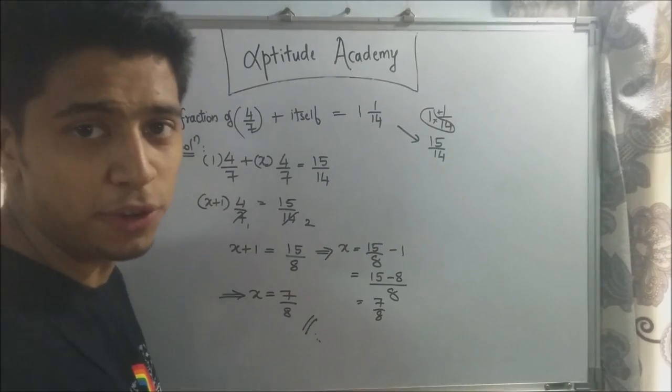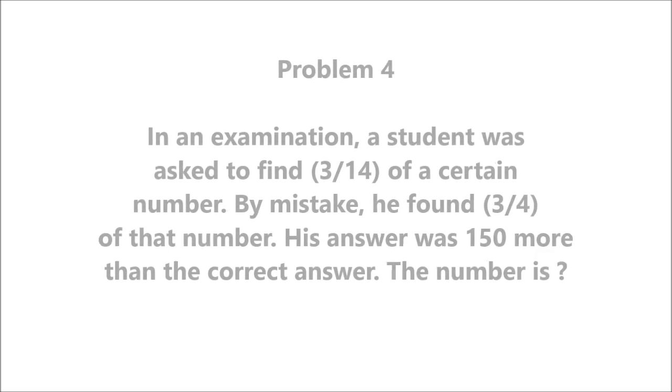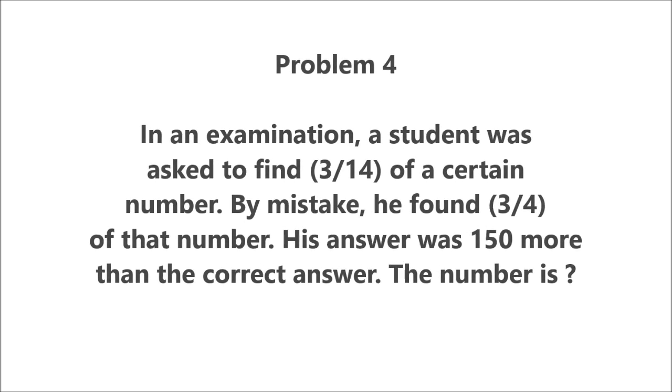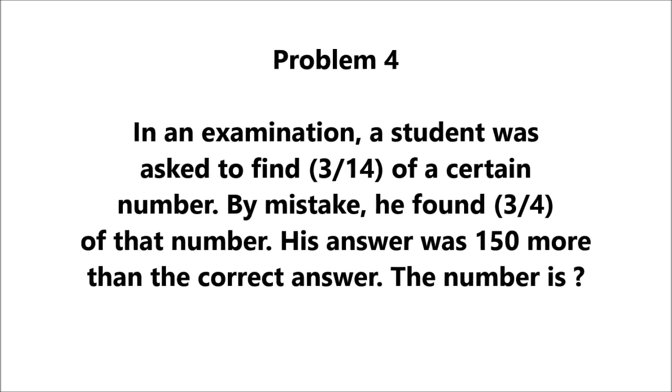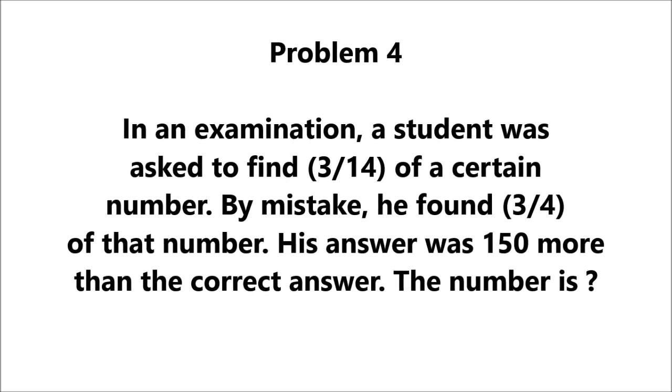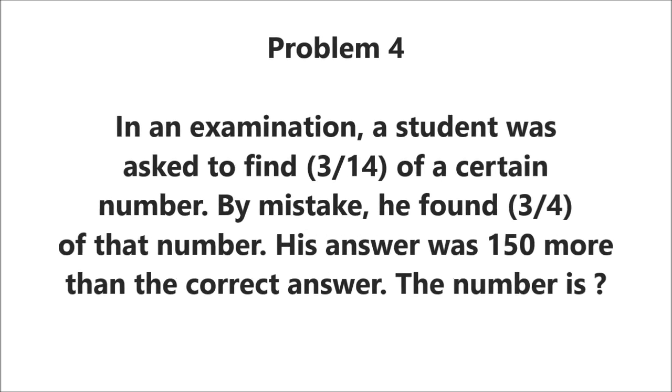Let's go to problem number 4. Problem 4. In an examination, a student was asked to find 3 by 14 of a certain number. By mistake, he found 3 by 4 of that number. His answer was 150 more than the correct answer. The number is?